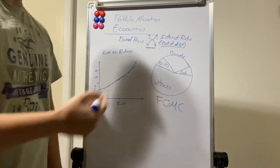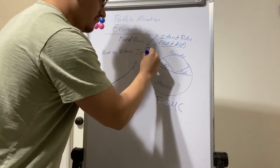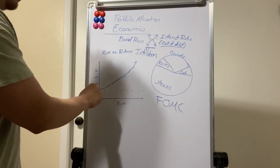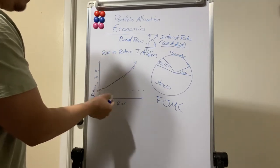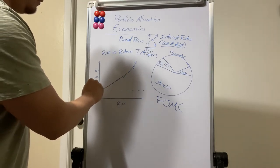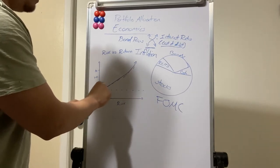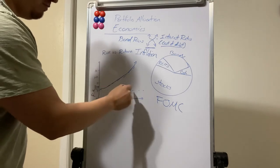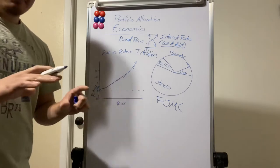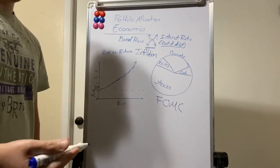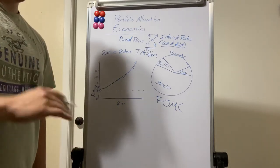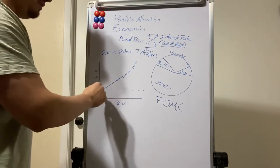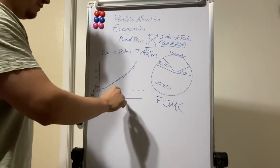Depending on what interest rates do, your bonds could actually lose value, and in most cases you also have inflation affecting your returns. This graph shows the risk-return tradeoff. The risk-free rate of return (RF) is what a government bond yields — currently around two to three percent. Because the government is the safest asset, analysts view this as the risk-free rate. Anything above this line is where risk and return both go up.